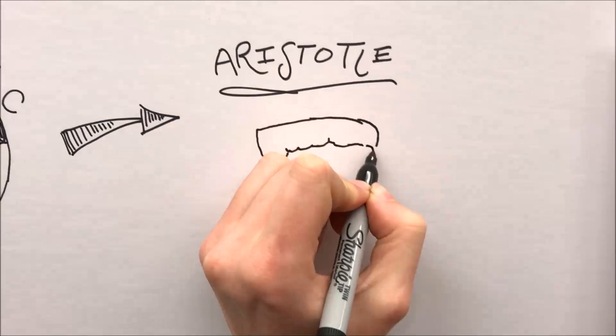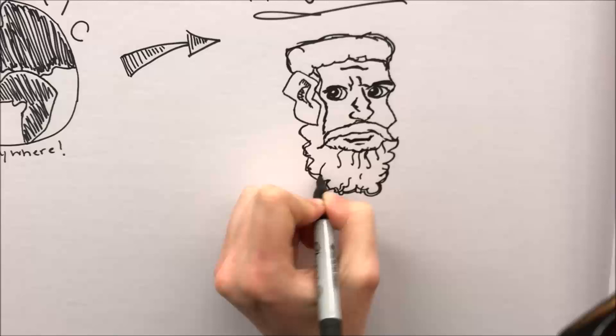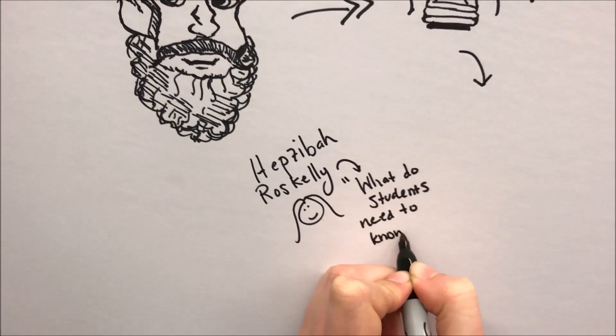Aristotle is known as the father of rhetoric and defines it as the art of observing in any given case the available means of persuasion. He created the rhetorical triangle to illustrate these available means.